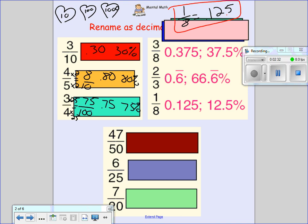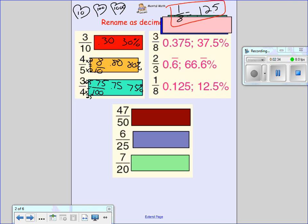Let's continue down a little lower on this page here. 47 over 50, we can put this one into 10, 100, or 1,000. We're going to convert this into 100, going times 2, times 2. 47 times 2 would give me an answer of 94, which is 0.94, or 94 percent.